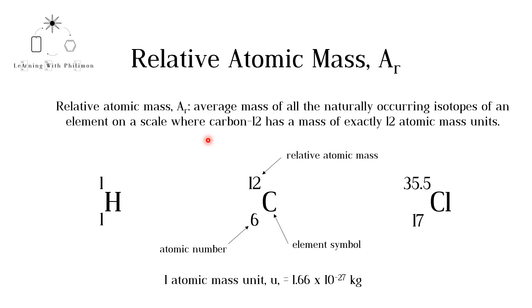In simple terms, the mass of all elements is compared to the mass of the carbon-12 isotope, which is said to be 12. Note that carbon-12 is the most common isotope of carbon, although carbon-13 and carbon-14 also exist.